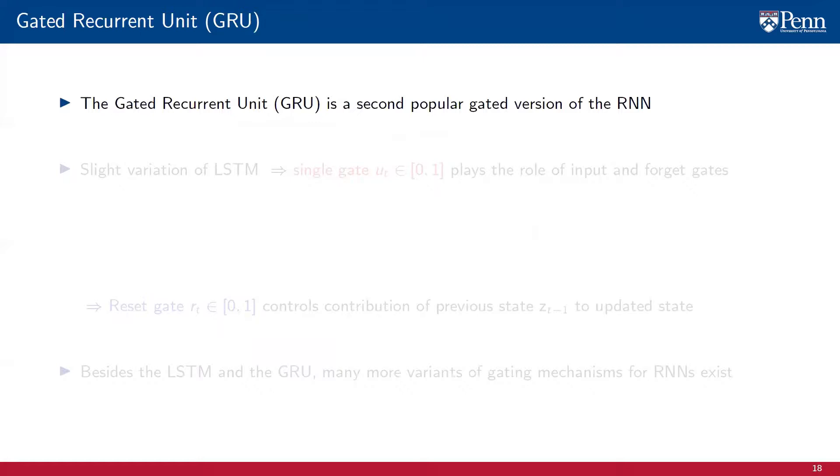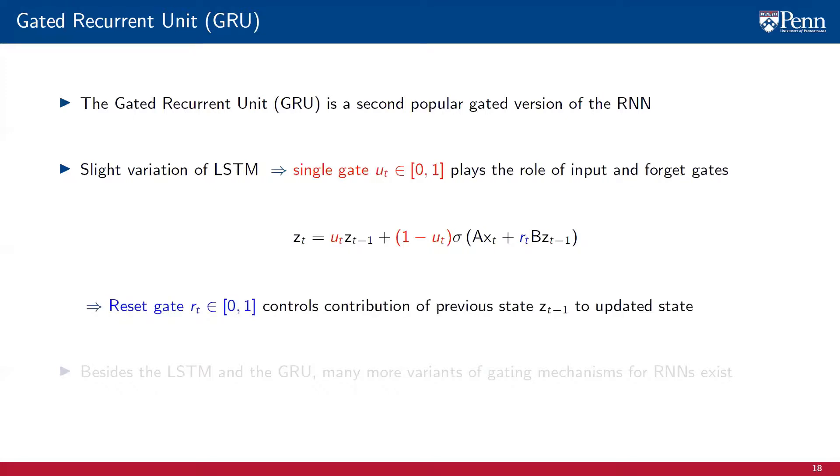Another popular model of gated recurrent neural network is the so-called gated recurrent unit, or GRU. GRUs are a slight variation of the LSTM model, in that now a single gate u plays the role of both the input and forget gates. That is, the hidden state of the recurrent neural network is now updated as u times the previous value of the hidden state z, plus 1 minus u, times the original update of the hidden state, that is, the result of applying the nonlinearity sigma to a linear combination of the input x and the previous hidden state z. Note that in this, the contribution of the previous hidden state z to the updated state is controlled by the reset gate r.